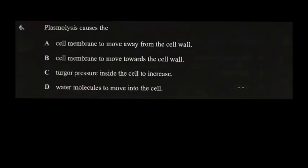I just realized we didn't load question five, so I'm going to load question five in the next video. For now we do question six, and we'll do five, seven, and onwards in the next video. Plasmolysis is a condition in a cell where the cell shrinks away from the cell wall — the cell membrane shrinks away from the cell wall because of a concentration gradient in terms of water.